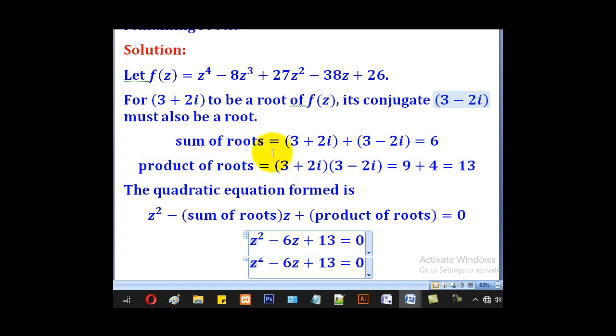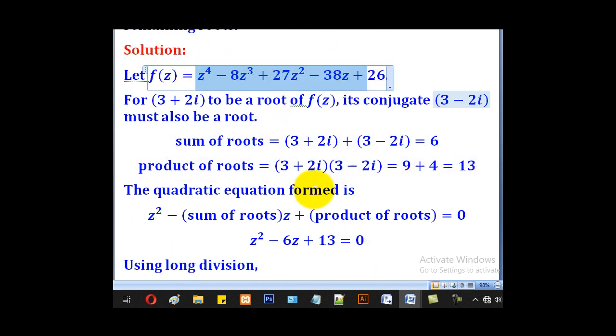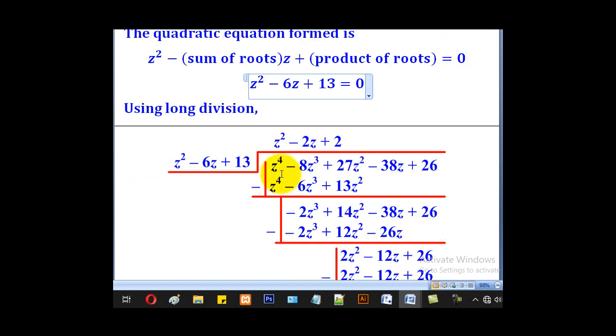The other roots will be got by dividing. We will say this divided by that, and that is easily done by long division. So this is the equation given, and this will be our divisor. We get this highest power divided by this to get z². Z² multiply through this to get this. When you subtract, you come up with this.